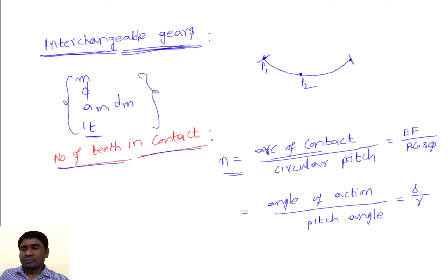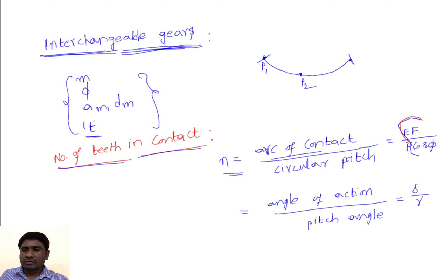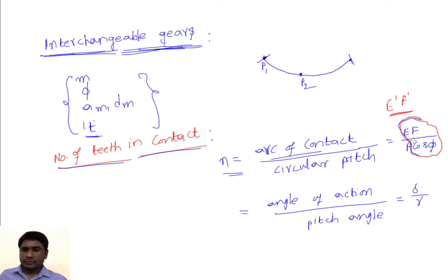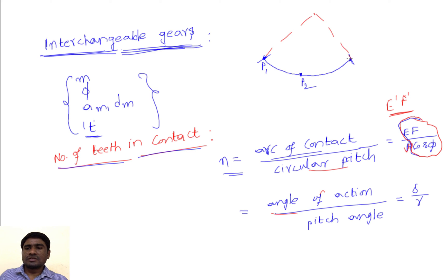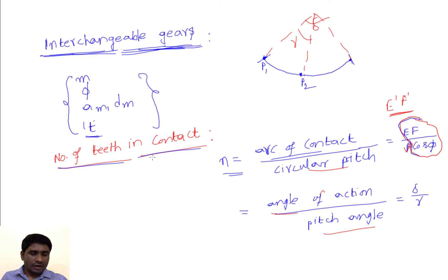The total arc of contact divided by circular pitch gives the number of teeth in contact. That is given as EF divided by cos-phi, where EF is the path of contact and E-dash F-dash is the arc of contact — this is the projection that gives the arc of contact. Circular pitch is denoted as small p. The same thing can be represented in terms of angles: the angle of action is the angle made by the arc of contact at the center, and the pitch angle gamma is the angle made by the pitch circle. Delta divided by gamma also gives the number of teeth in contact. For continuous motion, at least one tooth must be in contact.